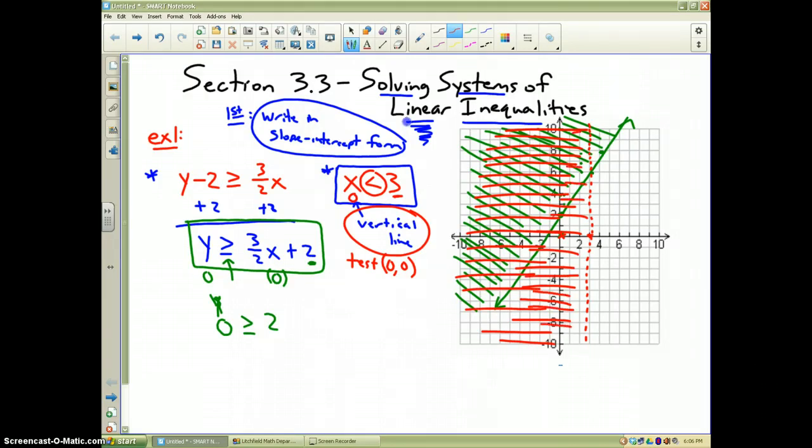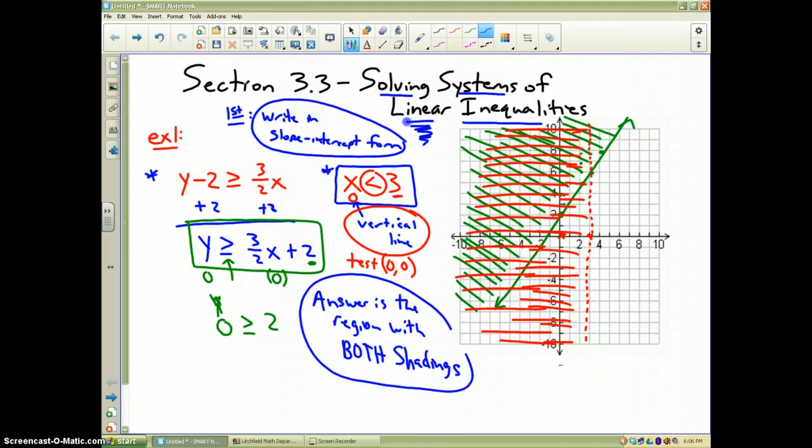Now the question is, where is the answer to the problem? The answer is the region with both shadings. The place where both red and green shadings, that's the solution. So I'm going to draw that in blue. So it's a dotted line there and then it's a solid line here and everything up here inside that blue region, that is the answer to my system of equations.